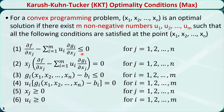The first condition is an inequality constraint. It should be applied to all the n decision variables, x1 through xn. The second condition is an equality constraint — it says either xj is equal to 0 or this part should be equal to 0. This part is exactly the same as the left-hand side of the first condition, and it should be applied to all the n decision variables as well. The third condition is actually the constraint — we just move the right-hand side to the left — and it should be applied to all the m constraints. The fourth condition is an equality constraint: either ui is equal to 0 or this part is equal to 0. This part is exactly the same as the left-hand side of the third condition, and it should be applied to all the m constraints as well.